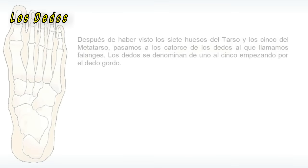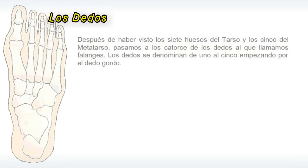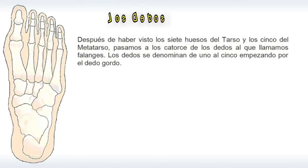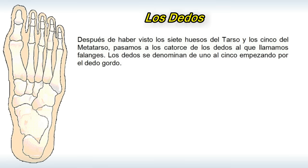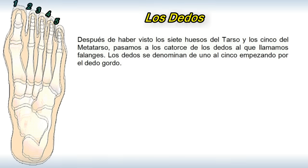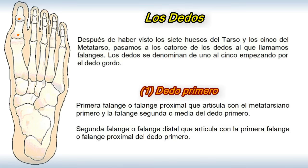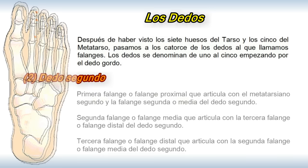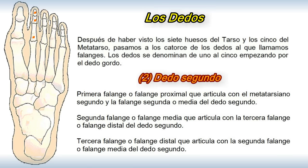Los dedos. Después de haber visto los 7 huesos del tarso y los 5 del metatarso, pasamos a los 14 de los dedos, a los que llamamos falanges. Los dedos se denominan del 1 al 5 empezando por el dedo gordo. Primera falange o falange proximal que articula con el metatarsiano I y la falange II o media del dedo I. Segunda falange o falange distal que articula con la primera falange o falange proximal del dedo I. Primera falange o falange proximal que articula con el metatarsiano II y la falange media del dedo II.